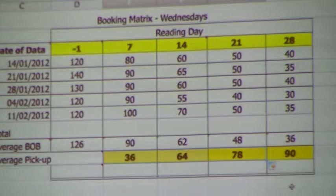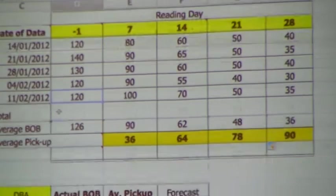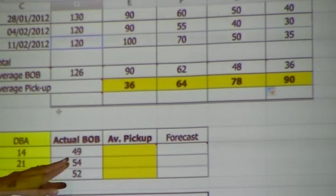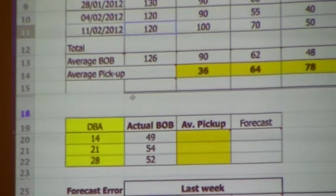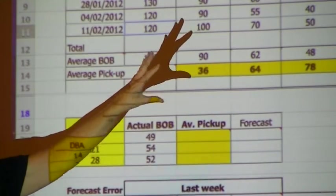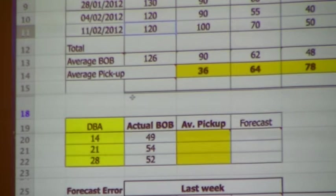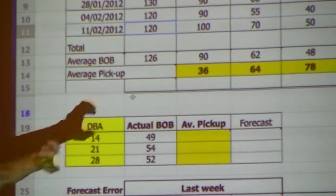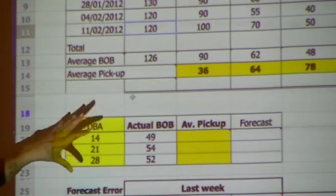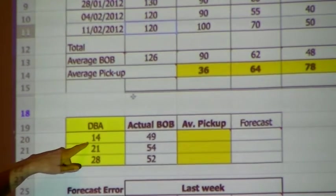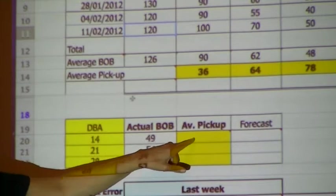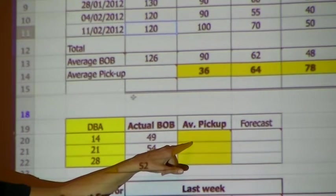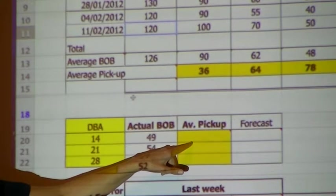Now we're going to use this to forecast. What we're doing is saying: this is data from the past — 2012 — we're going to use that to forecast the future. Remember, we can only use this data from the past to forecast for similar days in the future, so it's a period we expect to be similar. We're looking at forecasting for a date in 14 days. So we need to know: what is the average pickup on this type of day? How many more bookings could we still expect to get? We actually have 49 reservations on hand.